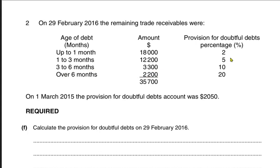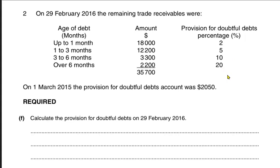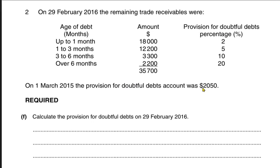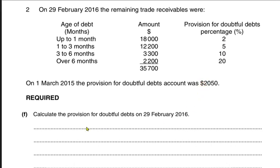The provision for doubtful debt percentages given are 2%, 5%, 10%, and 20%. On 1st March, that is the start of the year, the provision for doubtful debt account was 2,050 — this was the opening provision. We need to calculate the provision for doubtful debt on 29th February 2016, that is end of the year.